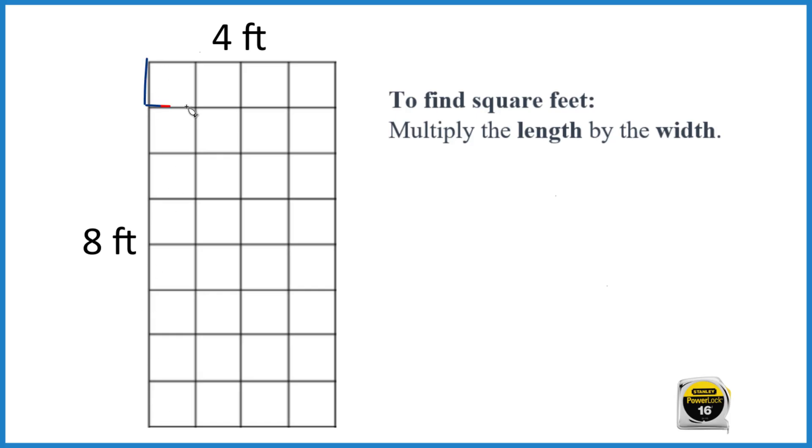So each box is one square foot. And if you count all of these up, you get 32 square feet. So a four by eight room or patio, it's going to be 32 square feet.